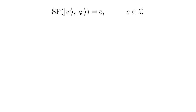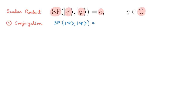After this reminder about the scalar product in the usual Euclidean three-dimensional space, we're now ready to move on to the scalar product in state space. The scalar product SP between |ψ⟩ and |φ⟩ gives us a scalar C, and in this case the scalar is a complex number because state space is a complex vector space. This highlights a crucial difference: the Euclidean three-dimensional space is a real vector space, whereas state space is a complex vector space, and this difference becomes obvious when we look at the properties of the scalar product in state space.